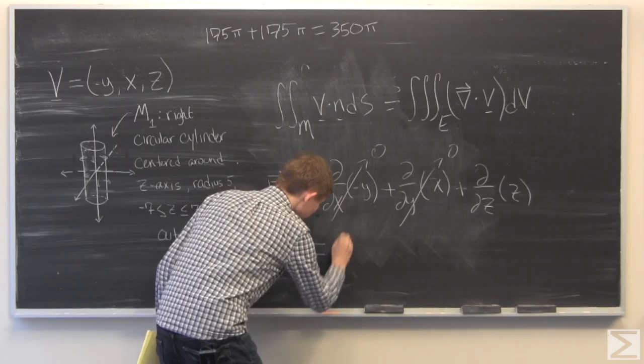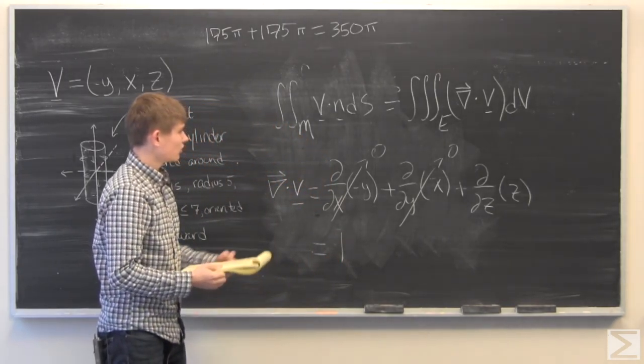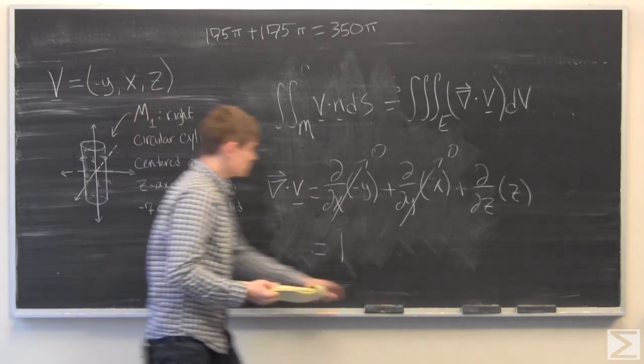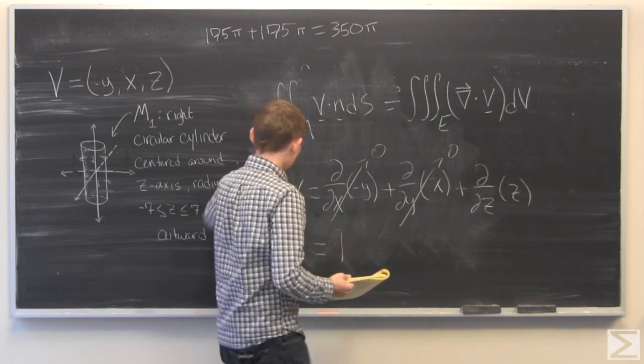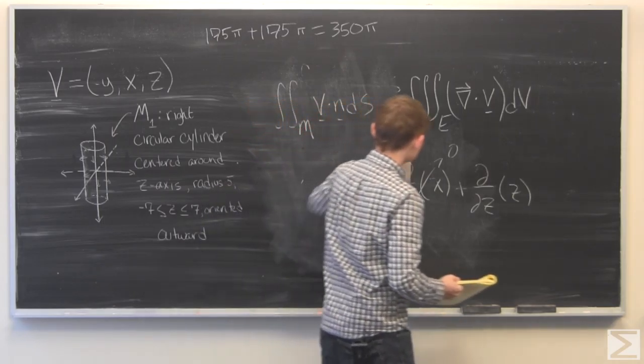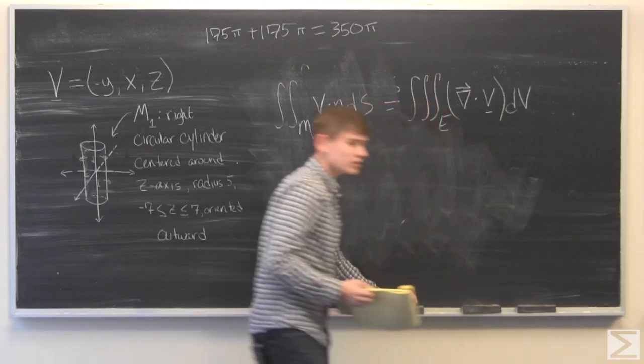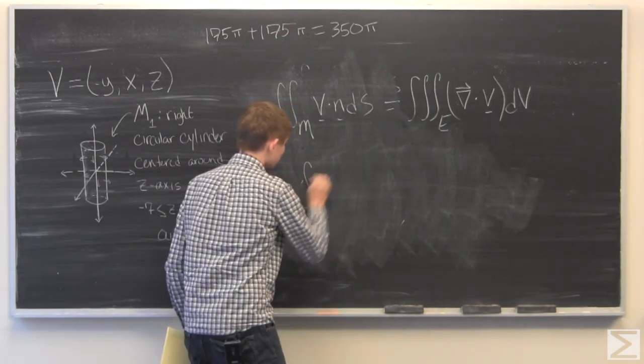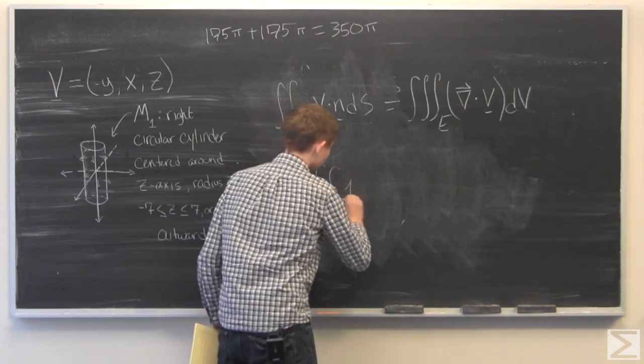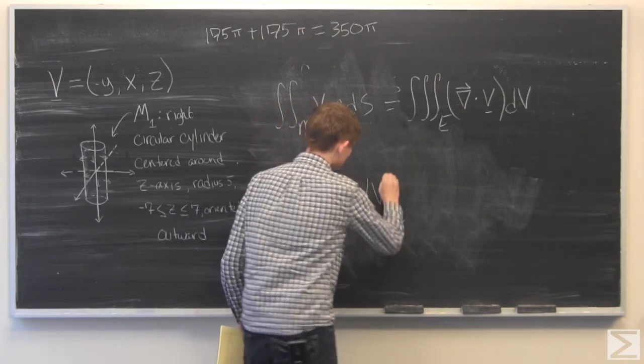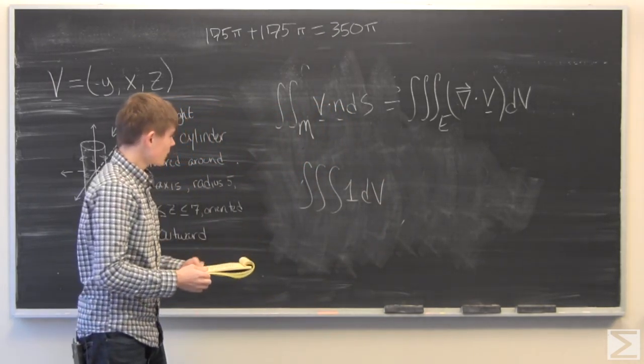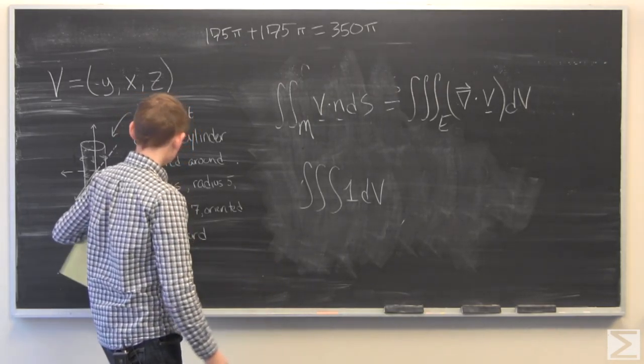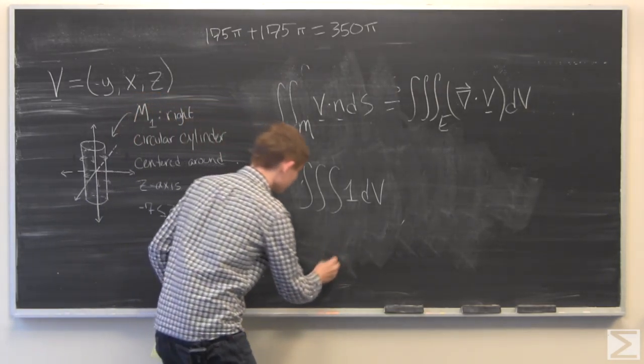So we just get 1, which means that we are just going to be calculating the volume of this cylinder, since we're going to have the triple integral with the integral of 1. And we should all be able to figure this out.